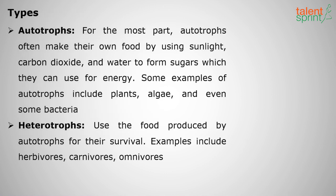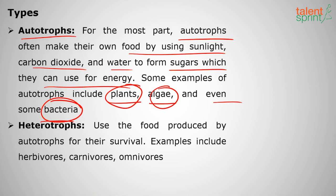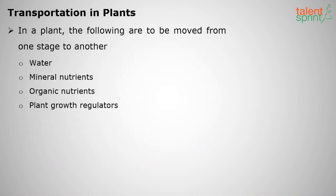There are two types of organisms based on food production. Autotrophs are those which can prepare their own food using sunlight, carbon dioxide, and water to form sugars for energy. Not only plants — algae and some bacteria can also perform photosynthesis. Heterotrophs are those which depend on autotrophs for their food, like animals and some other plants. These include herbivores which eat grasses, carnivores which eat herbivores, and omnivores which eat both.